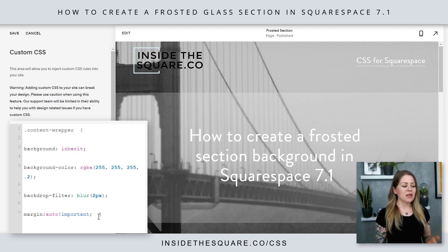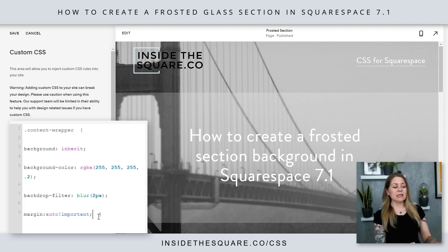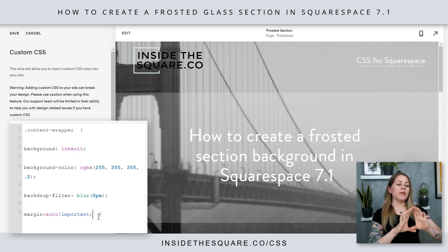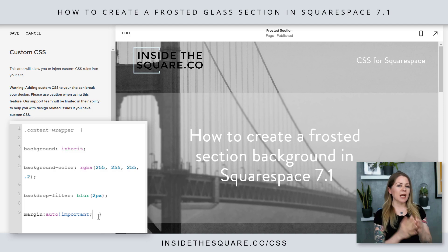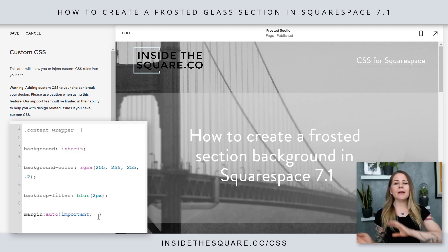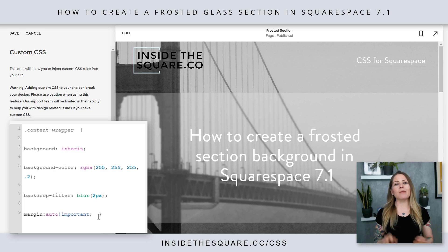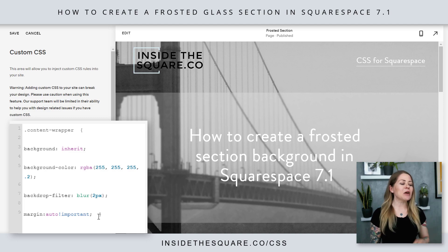After that, I've set the margin to auto and listed that as important. That's going to make sure that this frosted glass effect will take up the whole width and the whole height of the content wrapper. Basically, it'll match the stuff you already have on there so you don't have to fuss around with any extra code parameters.